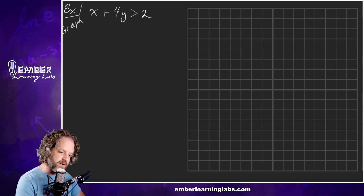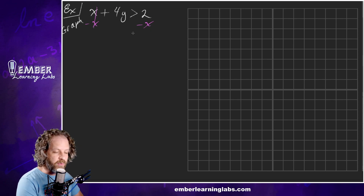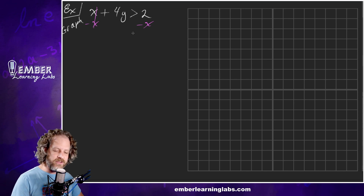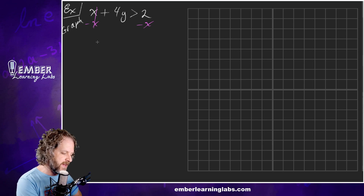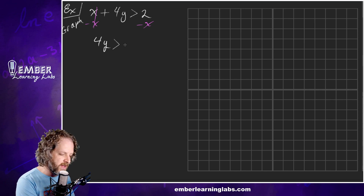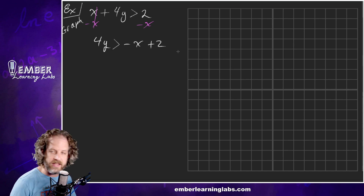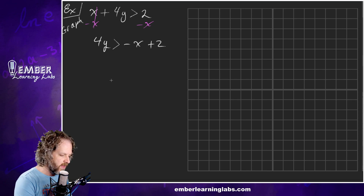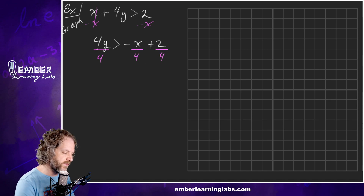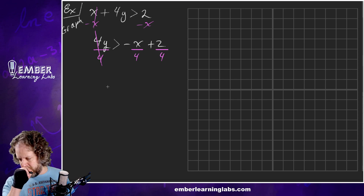First thing we're going to do is move that x over, so let's subtract x on both sides. The terms don't combine. We're going to put the x term first because it's y = mx + b — you don't have to do that, it's just a decent habit. So this turns into 4y is greater than negative x plus 2. They don't combine; they're not like terms. We've got to remember to divide everything by 4.